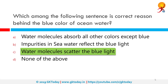The ocean looks blue because red, orange, and yellow are absorbed more strongly than blue. Red, orange, and yellow have longer wavelengths whereas blue has a shorter wavelength. So when white light from the sun enters the ocean, it is mostly the blue light that gets returned.